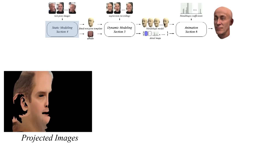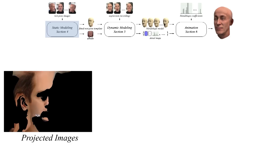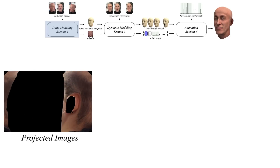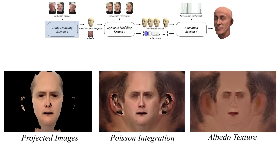The next step in the pipeline is the reconstruction of a high-resolution albedo texture. We first combine all images using Poisson integration. Since the input images contain the specific lighting of the recording environment, we apply an optimization to factor out the illumination. Missing parts of the texture are filled in using an in-painting algorithm.